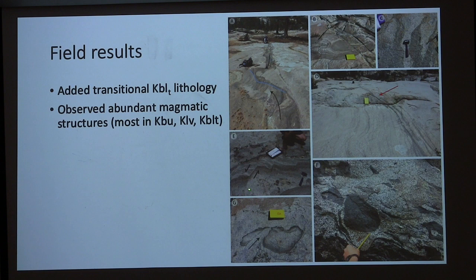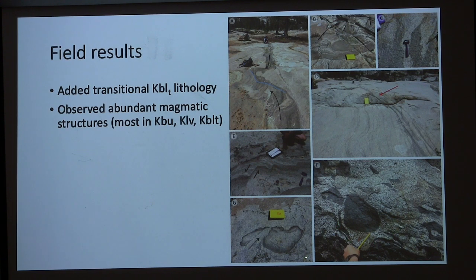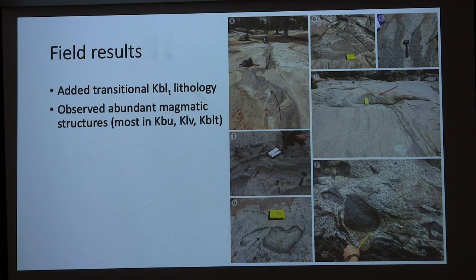We also see evidence of magmatic faulting, with a dark horizon that gets truncated. We see mafic magmas mingling with host magmas, and what is perhaps a plume head — a rising buoyant plume within the magma mush locally, where after it stalled the host magma re-intruded it. The takeaway is that we have lots of movement and a dynamic magma mush in different units.